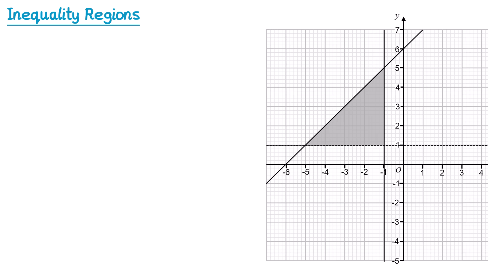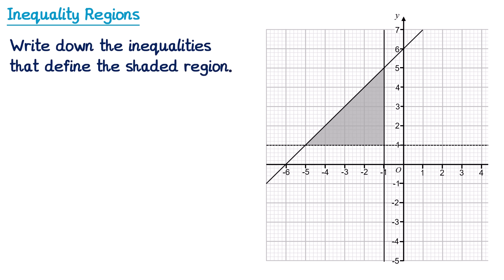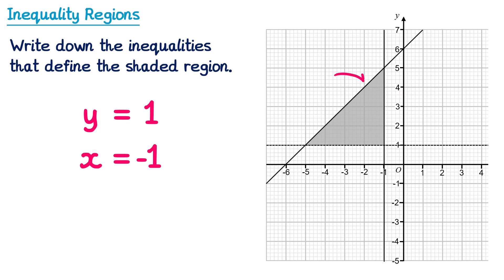Sometimes you may be given a question where the diagram is already drawn and you need to do the reverse: identify the inequalities. The question might say 'write down the inequalities that define the shaded region.' First identify the equations of all the lines. A horizontal line through 1 on the y-axis is y = 1. A vertical line through −1 on the x-axis is x = −1. For the diagonal line, we find the gradient and y-intercept just like in the 'equation of a line' video.